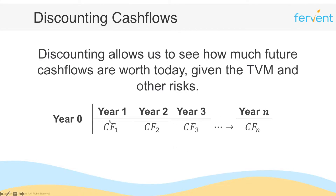What we have here is n number of different cash flows. We're right here in year zero, and then you're getting cash flow one in year one, cash flow two in year two, cash flow three in year three, and so on until the nth year. For simplicity, let's assume that all of these cash flows are equal in nominal terms — cash flow one is the same as cash flow two, which is the same as cash flow three, and so on.